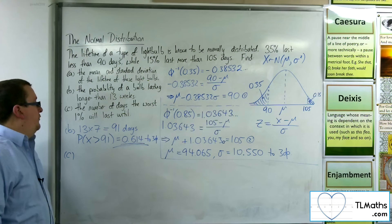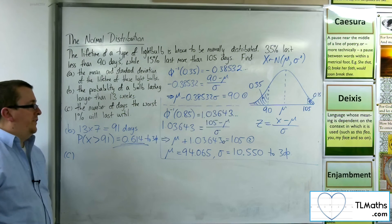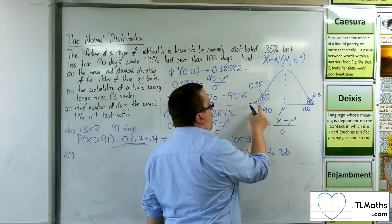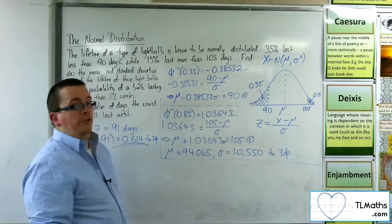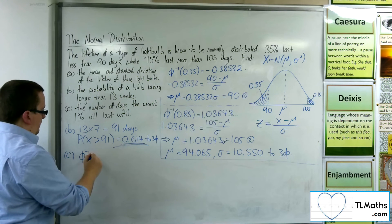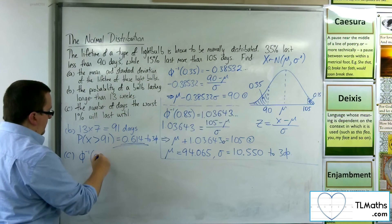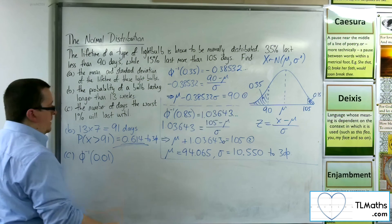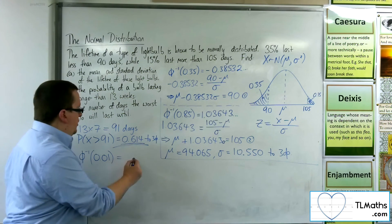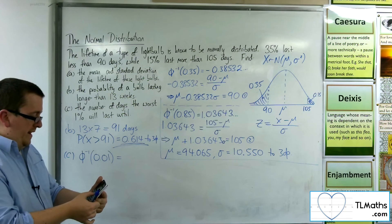Then for C, the number of days the worst 1% will last until. So that is the bottom 1%. What is the x value that goes with it? So I want to look up the inverse norm of the 1%. That's the area that I'm looking up.